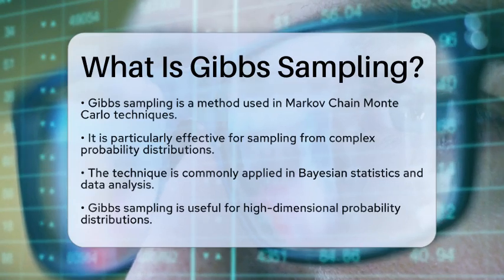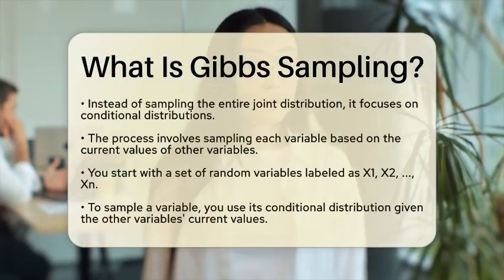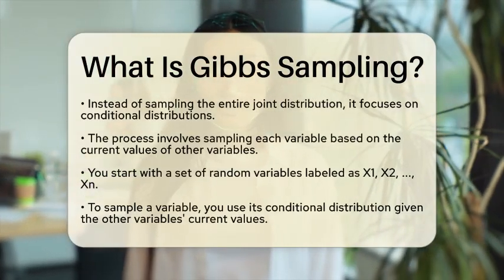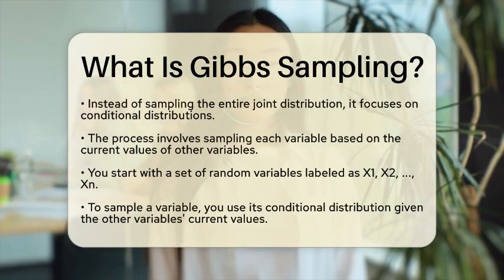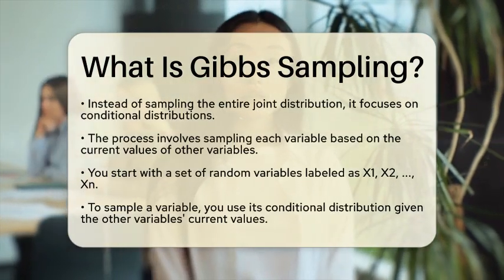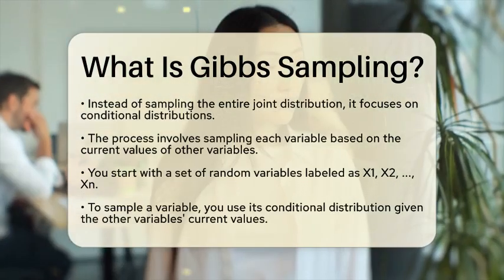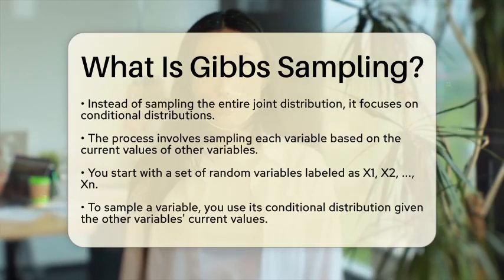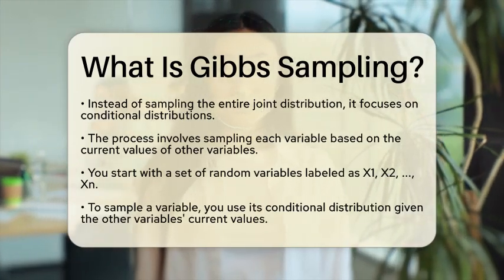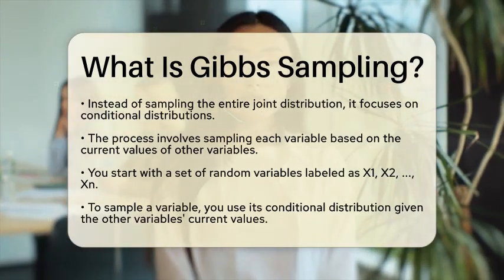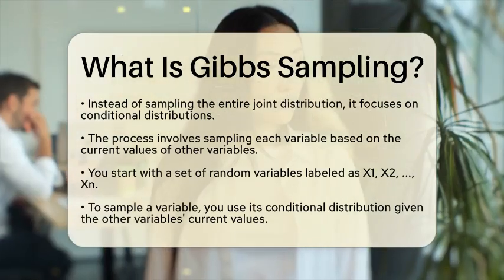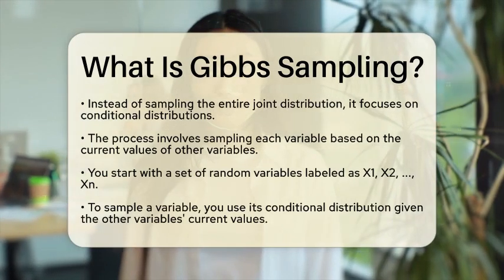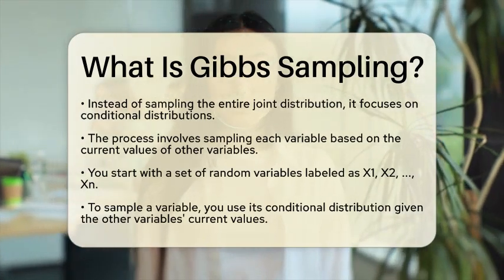To start with Gibbs sampling, you first need a set of random variables. Imagine you have variables labeled as X1, X2, and so on, up to Xn. Instead of trying to sample from the joint distribution of all these variables at once, you sample from each variable's conditional distribution. For example, to sample Xi, you would use the conditional distribution given the current values of all other variables.